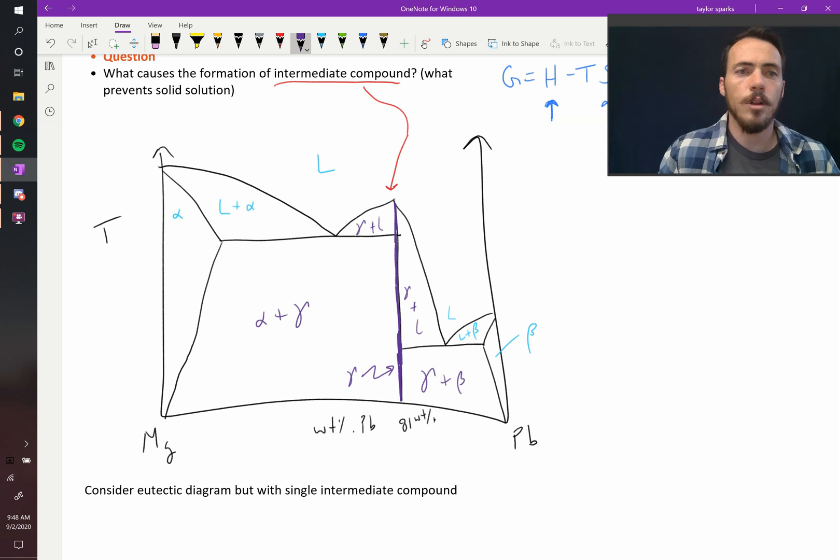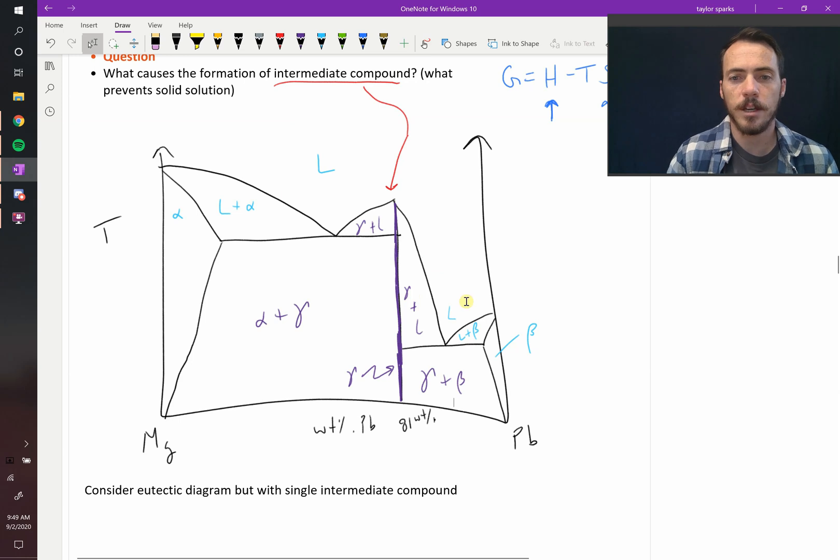So this would then be alpha plus gamma over here and this would be gamma plus beta. So this is an example of an intermediate compound. Again, it looks just like two back-to-back eutectic diagrams.